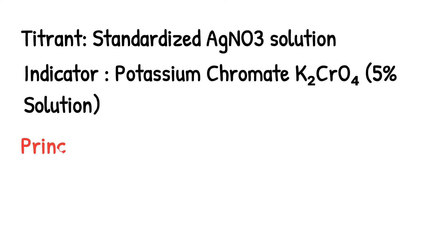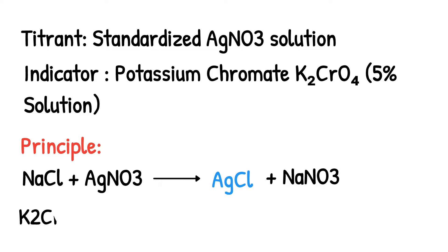The principle of Mohr's method is: when NaCl is reacted with AgNO3, the precipitate of AgCl is obtained. Now indicator is added, that is K2CrO4, and it is reacted with AgNO3 to form precipitate of Ag2CrO4, which is reddish brown in color.